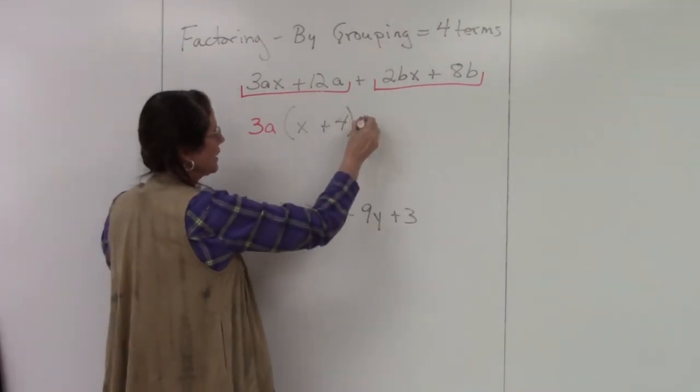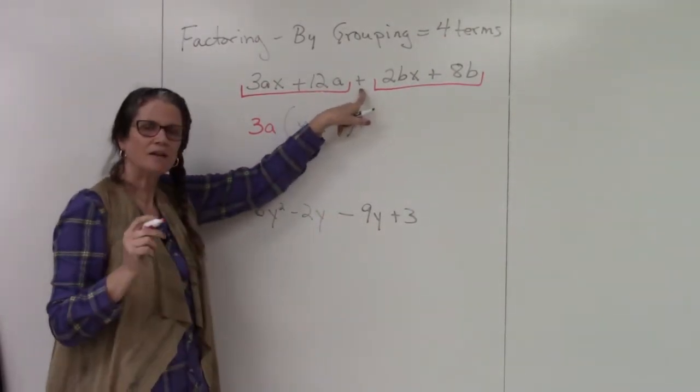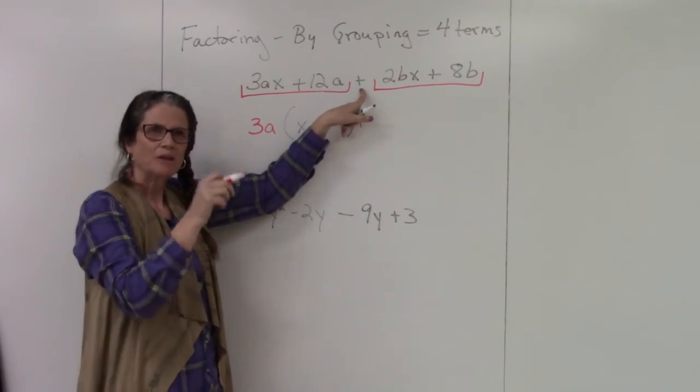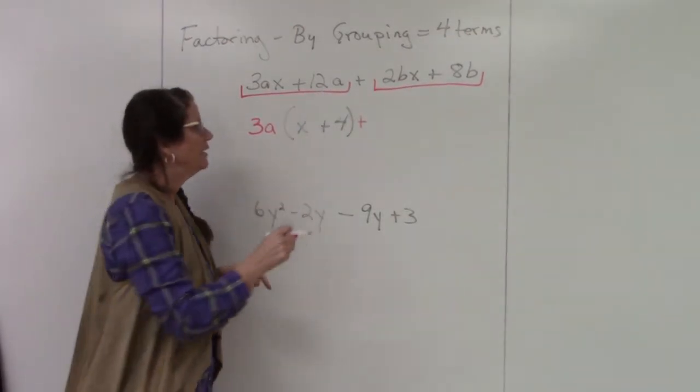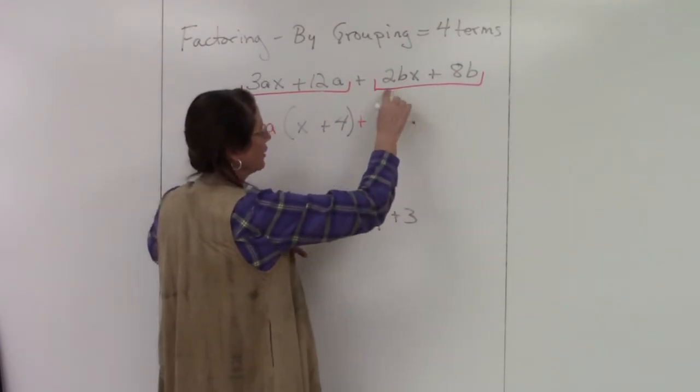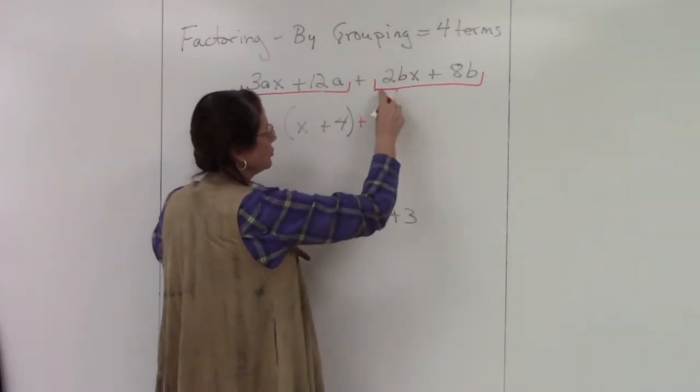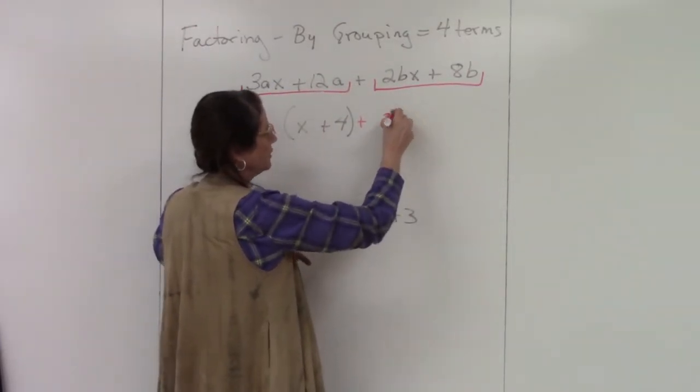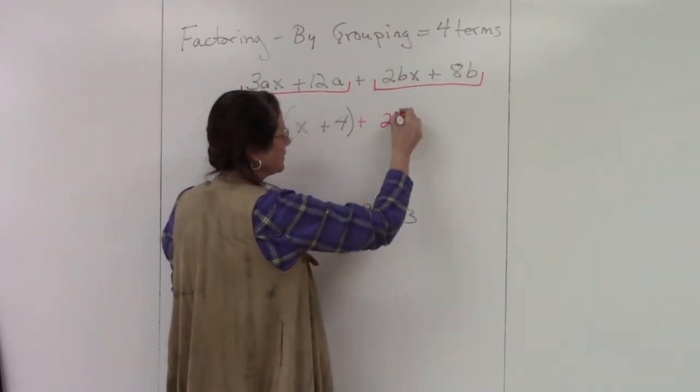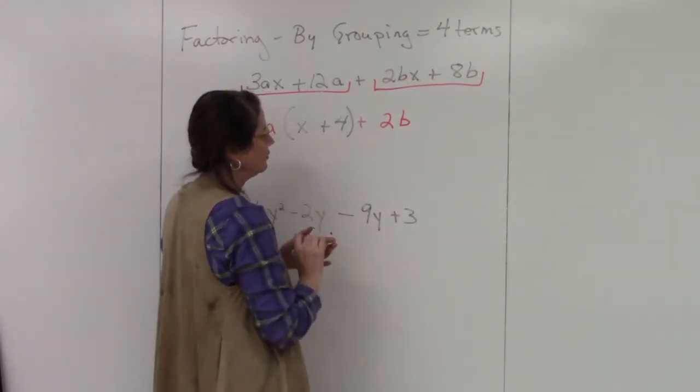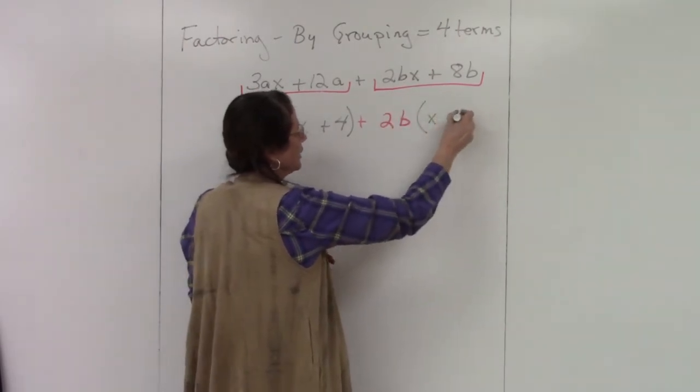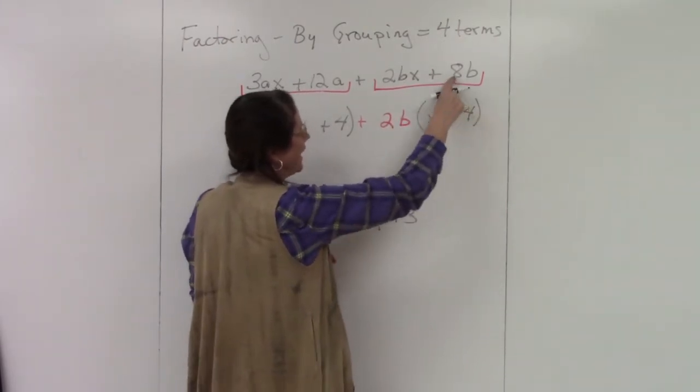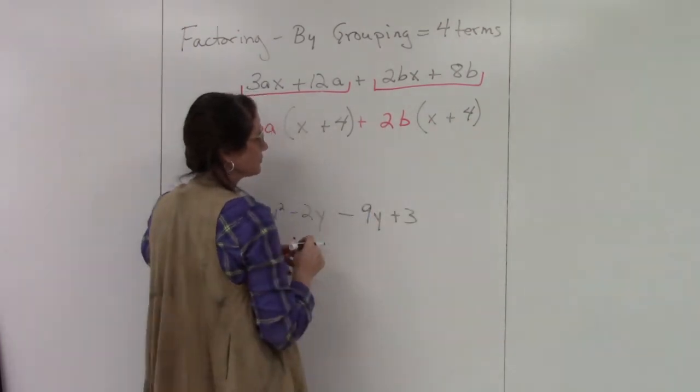Now I'm going to use this same sign. This middle sign is going to generate the proper procedure, so always use that middle sign. Now I jump over here and look: what's in common? 2 and 8—2 is in common. They have b's in common, so I'm going to factor out 2b. What's left? x plus 4, because 8 divided by 2 is 4.